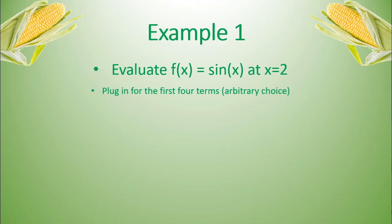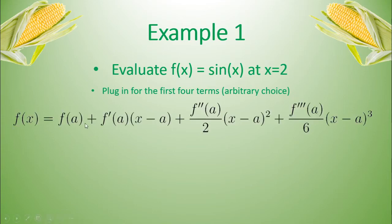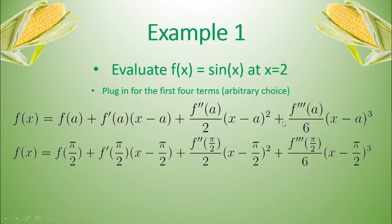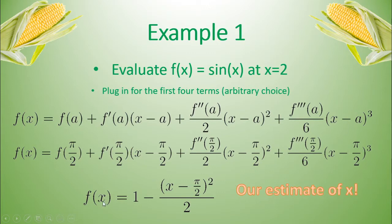So plugging in those first four terms, why are we using four terms? Well, we can't use an infinite amount of terms. So we have to make a choice at some point what terms, how many terms we're going to use. So we're just going to use four. Here's our first four terms. We plug in pi over 2 for a, and we know our derivatives from the previous slide. And so when we plug that in, our estimate of x is this. So this is our estimate of x, given that we know the points at pi over 2.